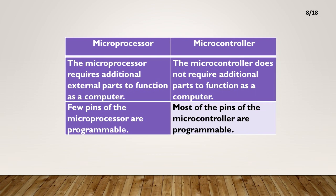The microprocessor requires additional external parts to function as a computer. The microcontroller does not require additional parts to function as a computer. Few pins of the microprocessor are programmable. Most of the pins of the microcontroller are programmable.